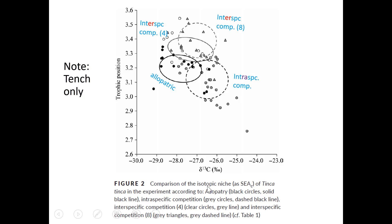Figure 2 shows the isotopic niche — essentially a measure of the area of the C13 ratio on one axis and the nitrogen-15 ratio on the other — a two-dimensional niche for the kinds of things the fish eat. When grown alone, this is the reference shape. When you add higher intra-specific competition there's a slight shift; when you add a competing species they shift in a different direction; and with even stronger competition, the niche shifts further still.